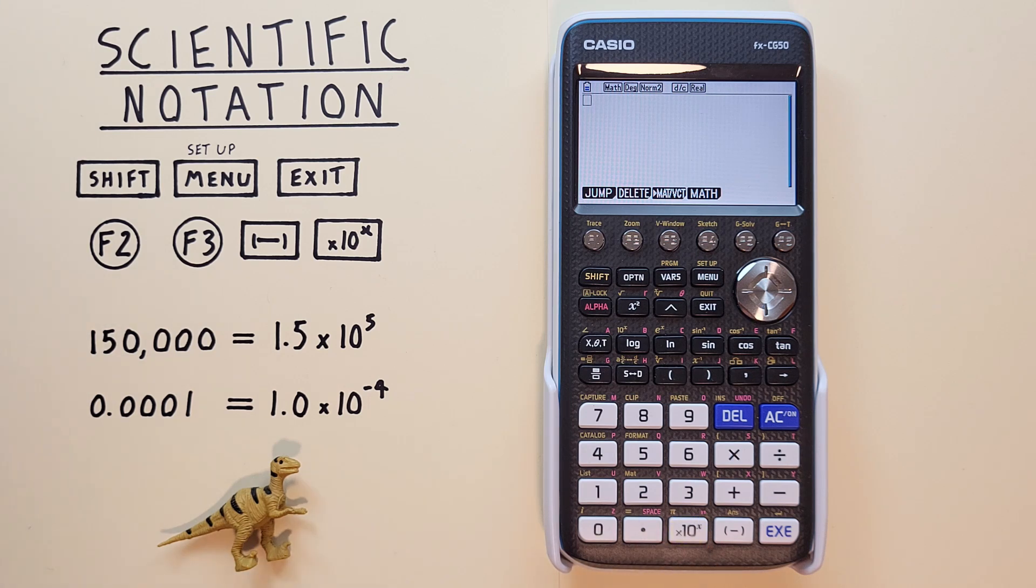Scientific notation is great for easily entering either really large or really small numbers into our calculator. For example, if we wanted to enter 150,000 into our calculator, we could write it like this: 1.5 times 10 to the power of 5.